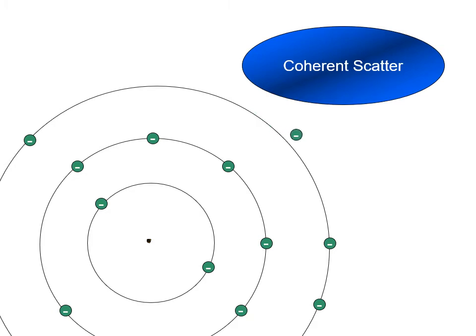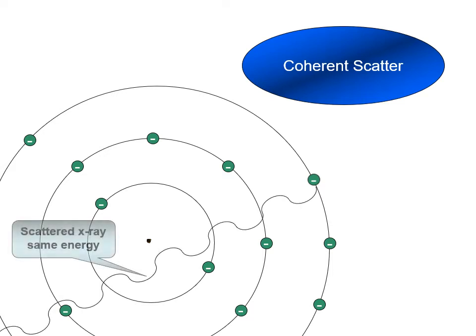As the electron circulates around the periphery of the atom, it wobbles back and forth with the frequency of the initial x-ray photon. Eventually, the wobbling electron re-emits the photon in a new and random direction.